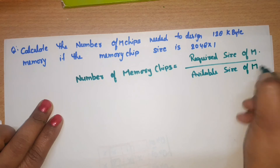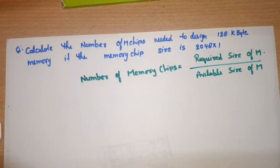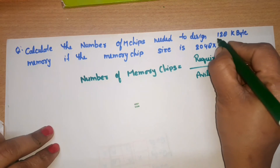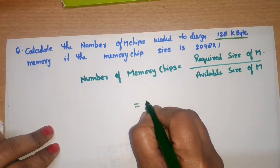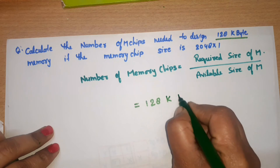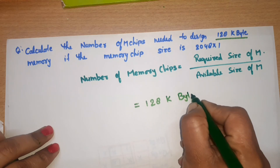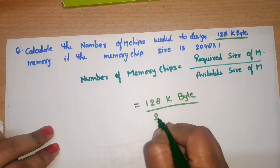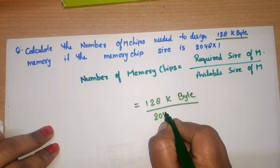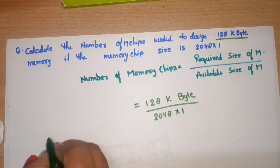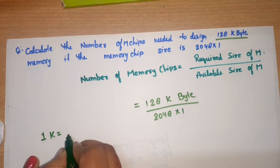In this question, our required size is 128K byte, and the available size is 2048 into 1. We know that 1K is equal to 1024, and 1 Byte is equal to 8 bits.